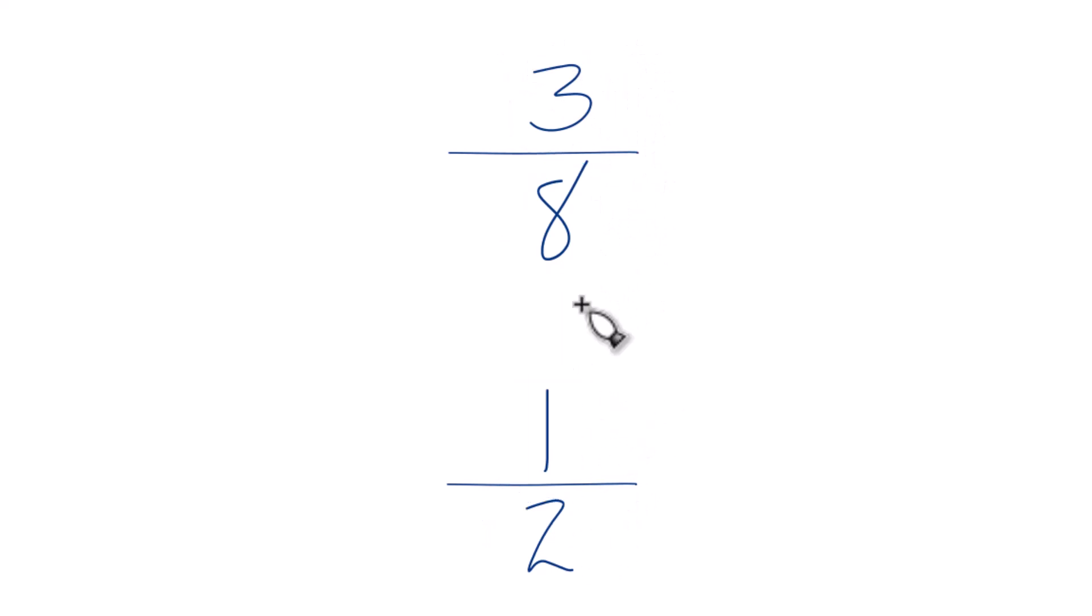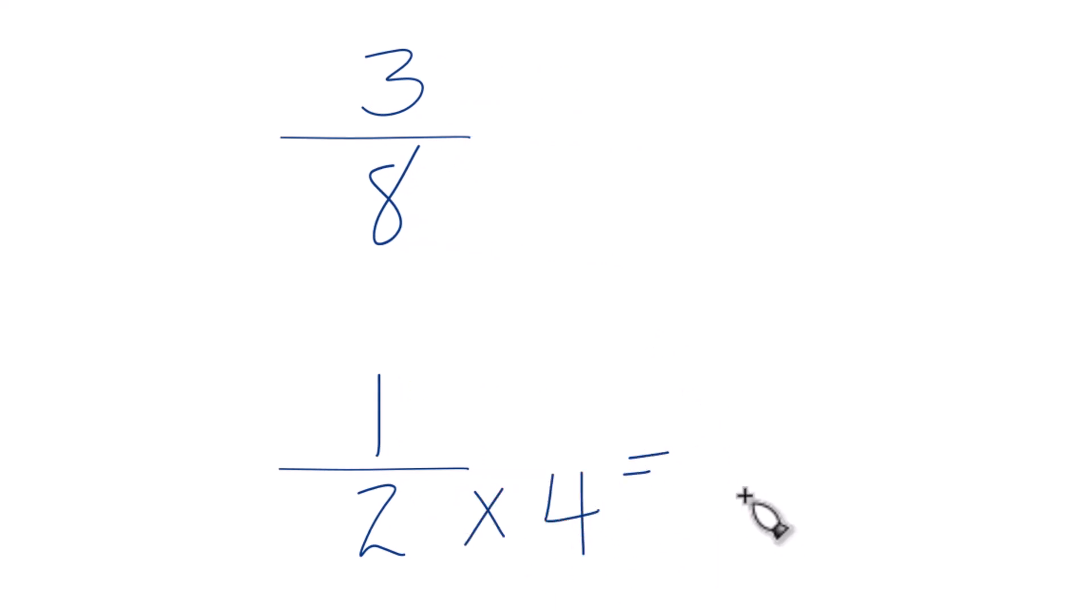So to do that, two goes into eight four times. We could say two times four equals eight. So we have eight as our denominator and up here we already have eight.